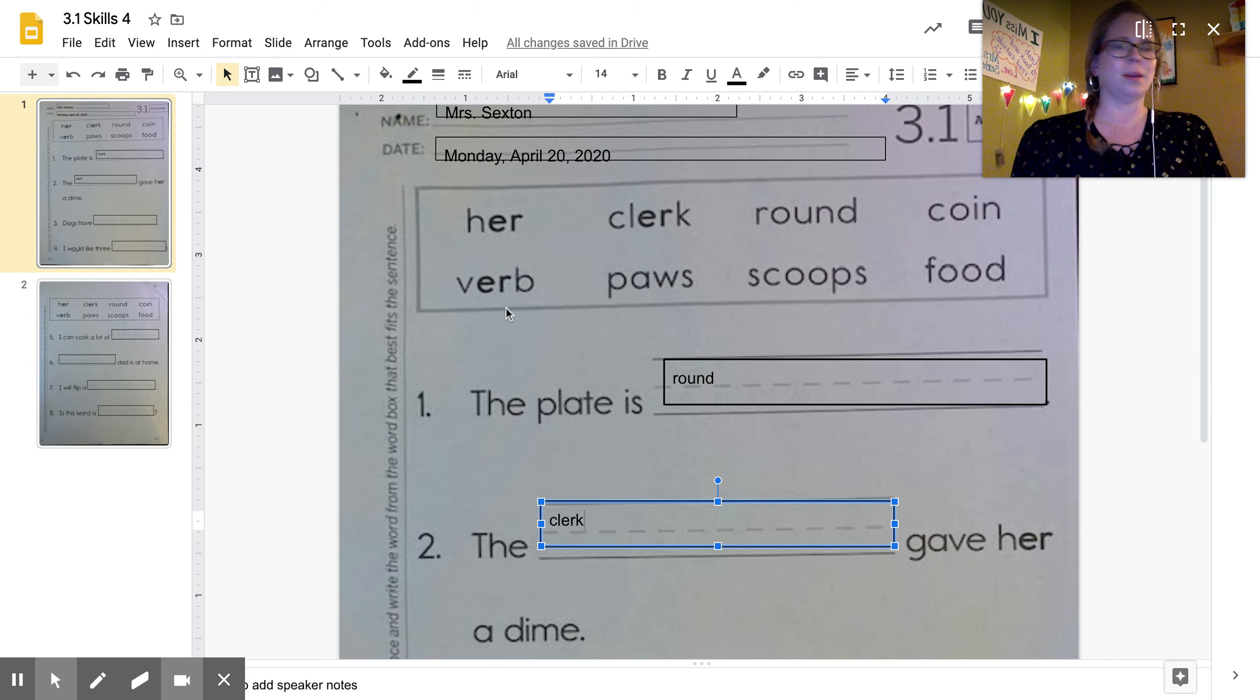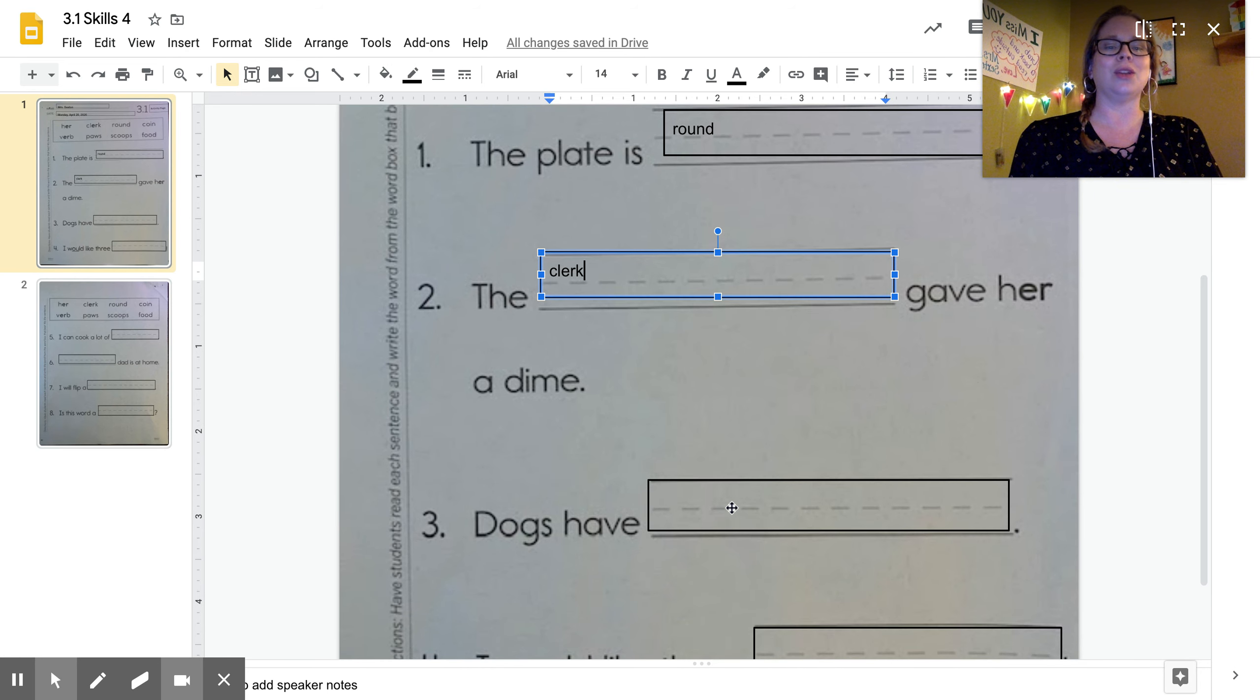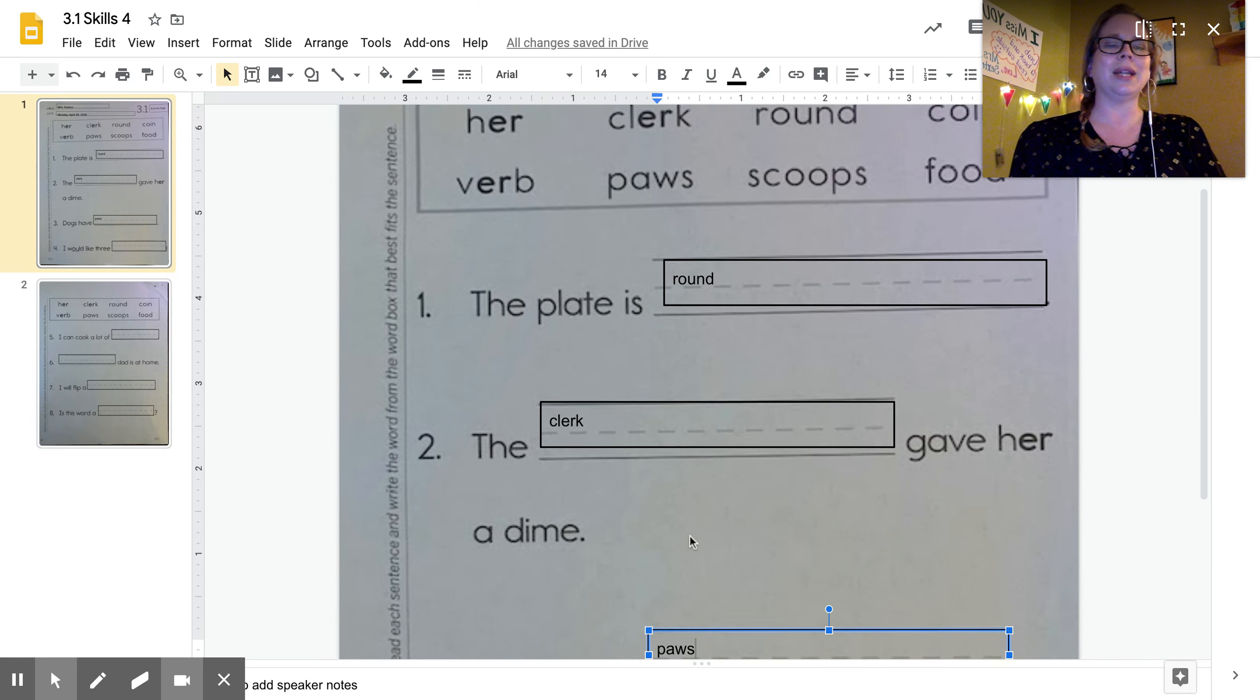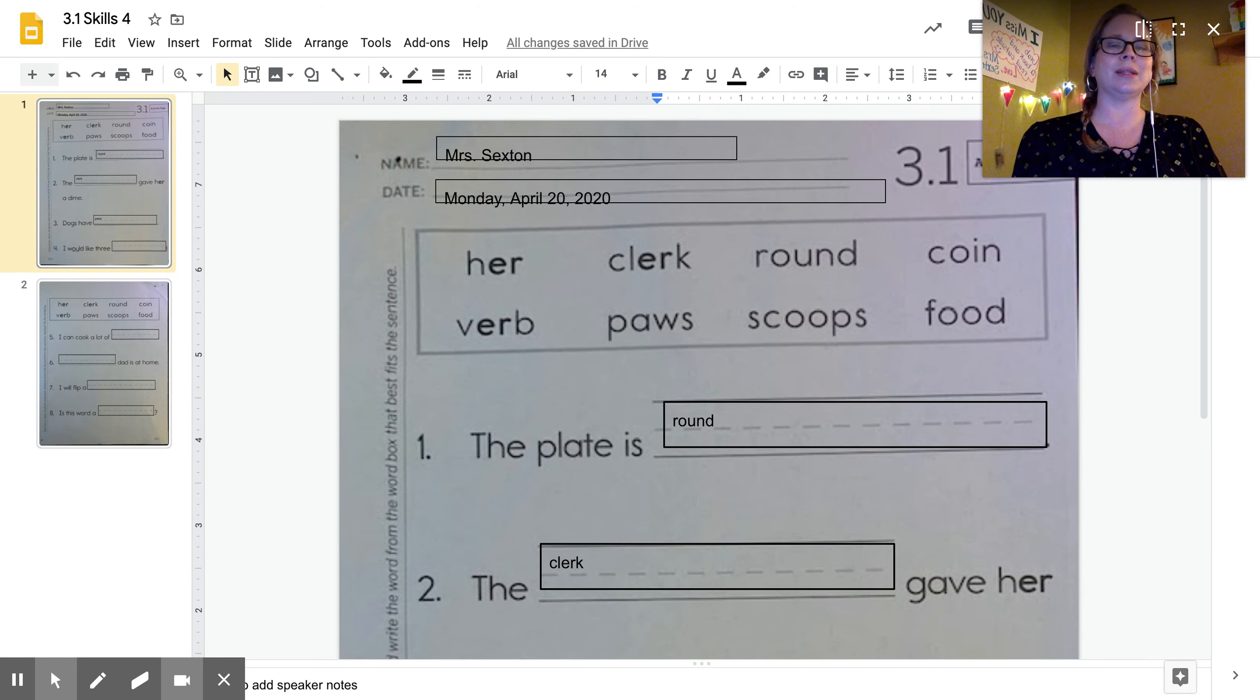Let's do number three together. Dogs have what? What do dogs have? I'm going to go back up to my box, let's look at my words: verb, paws, scoops. Well I see my dog over there laying down right now, and I can see that my dog has paws. And if you have a dog at home right now because you're working from your home, you can probably see that your dog too has paws. Paws.